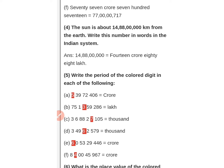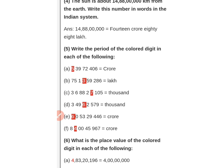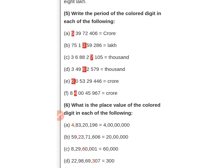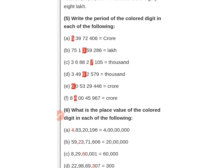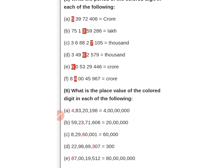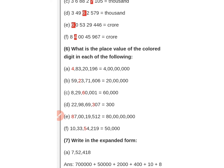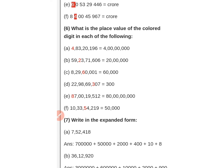Next: write the place of the colored digit in each of the following numbers. Five is in — counting from right: ones, tens, hundreds, thousands, ten thousands, lakhs, ten lakhs, crores. Then three is in lakh place. Seven is in thousand place. Six is in thousand place. Six is in crore place. Four is in crore place.